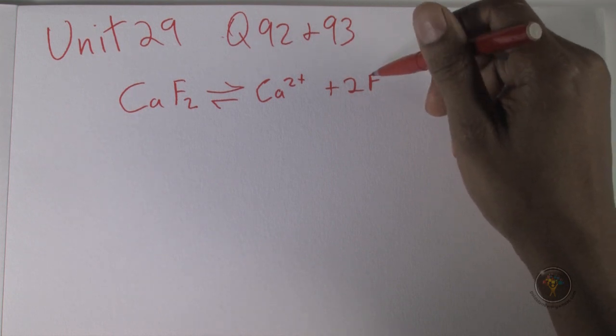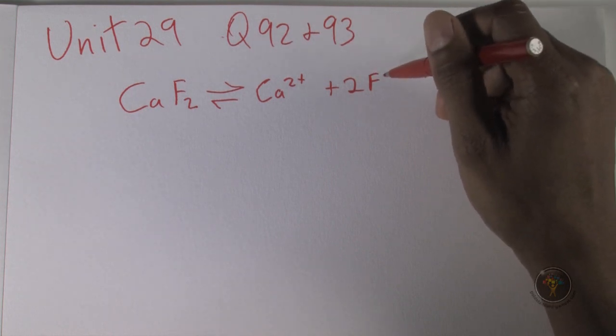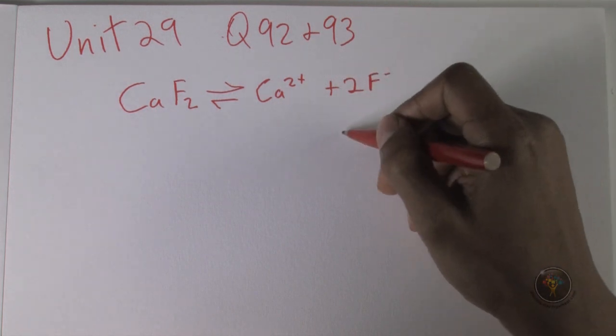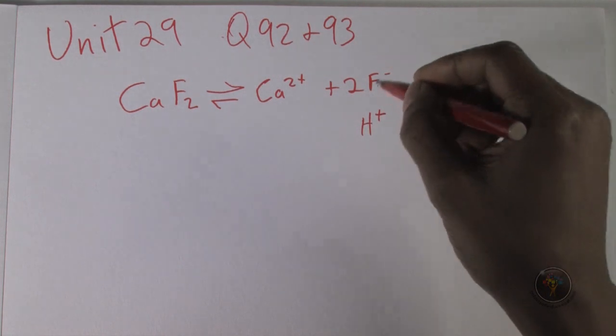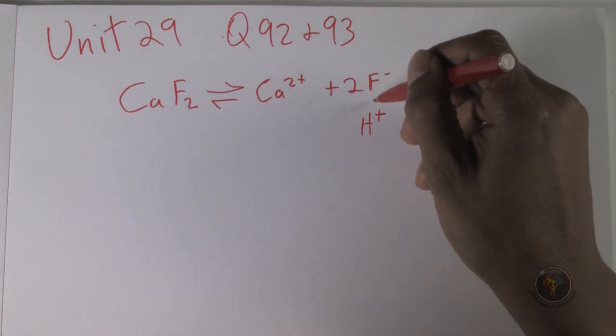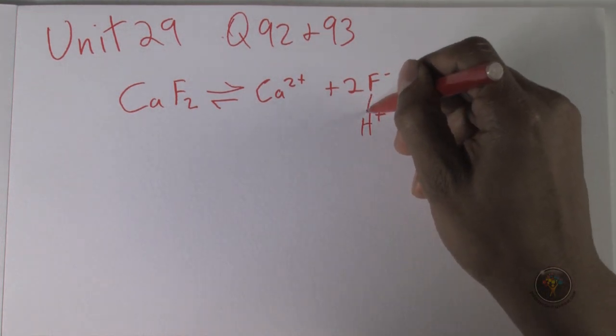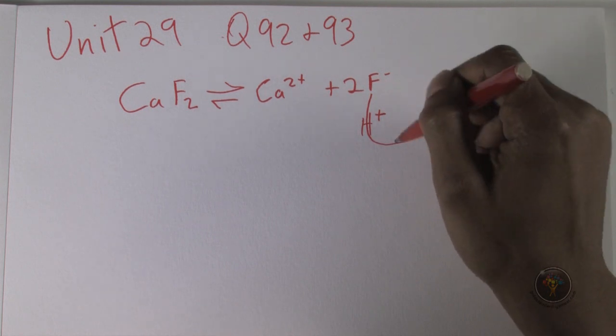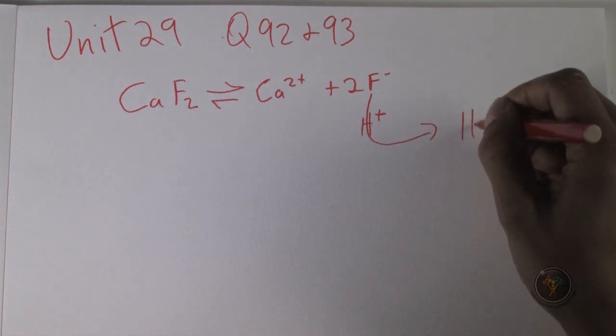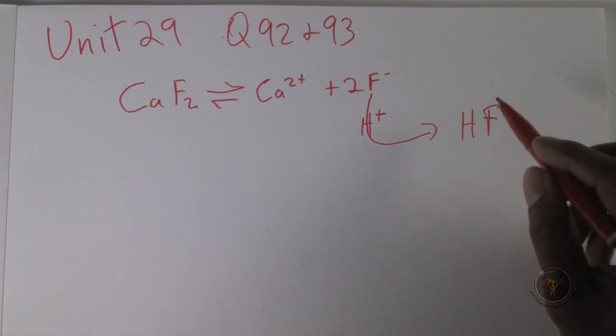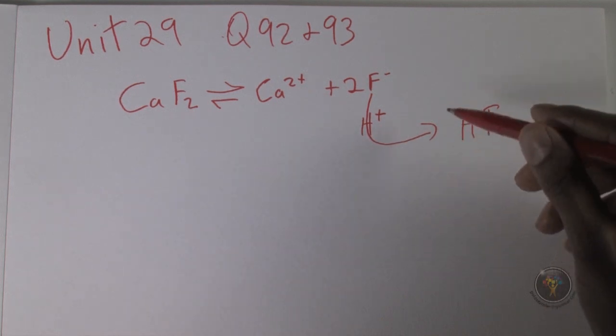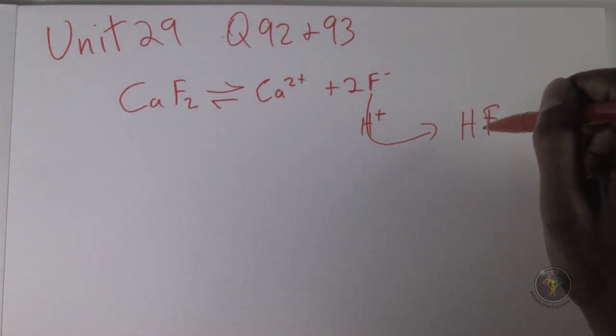In an acidic solution with H+ present, H+ will take away these fluoride ions and create HF. Since HF is a weak acid, it's not going to ionize and will just stay like this.